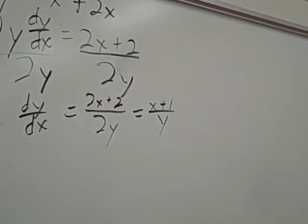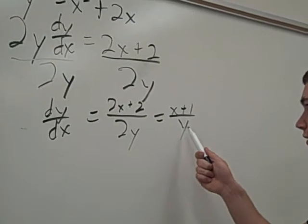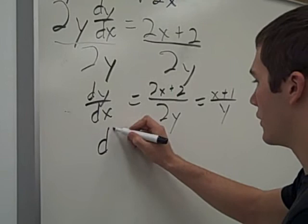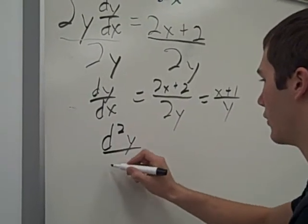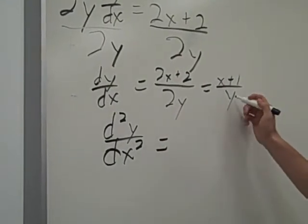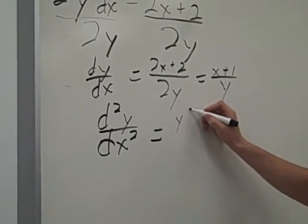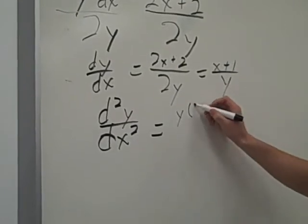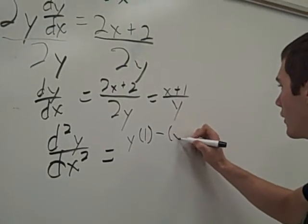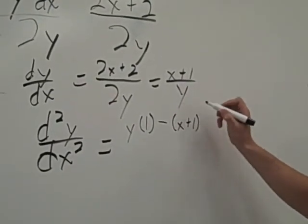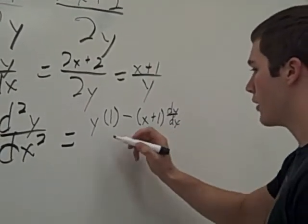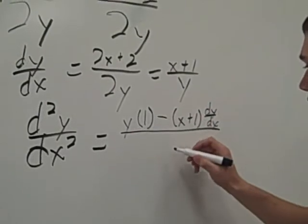Now to do the second derivative, we just differentiate this again, which we have to use the quotient rule. So d squared y over dx squared equals y times the derivative of the first 1 minus the first x plus 1 times the derivative of the second dy dx all over y squared.